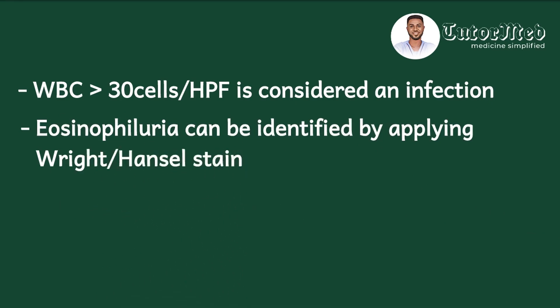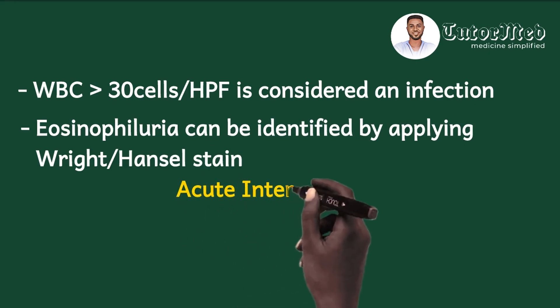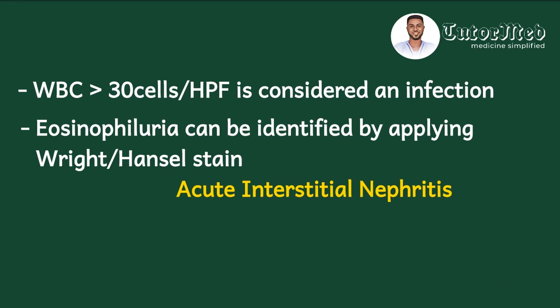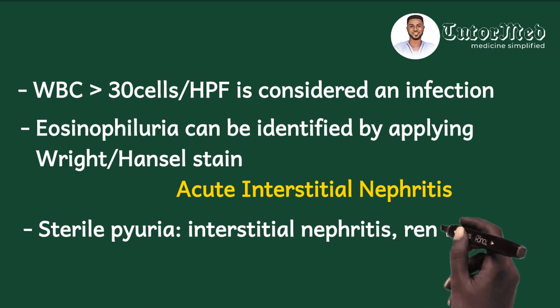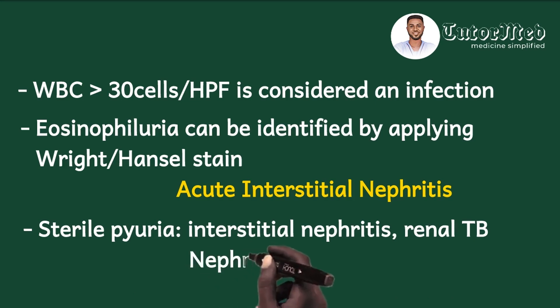Eosinophils in urine traditionally denote acute interstitial nephritis. However, it has been found that 64% of patients with biopsy-proven acute interstitial nephritis do not have eosinophils in urine, so a negative eosinophiluria does not rule out a suspected acute interstitial nephritis. If you have a patient with sterile pyuria you should be considering other causes like interstitial nephritis, renal TB, and sometimes kidney stones.